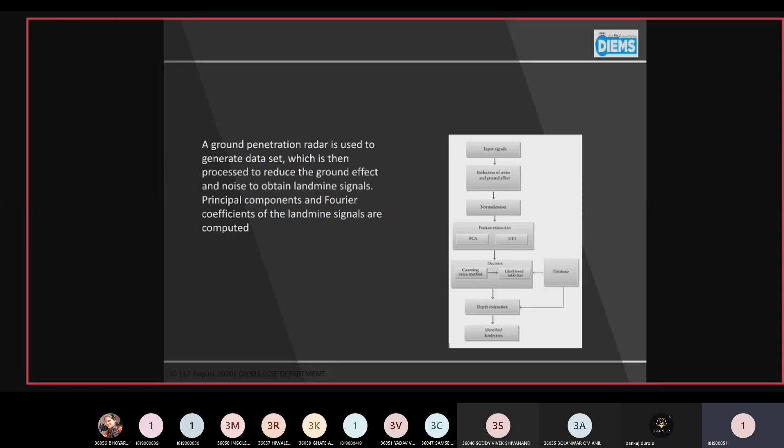The question arises, how does it happen that electromagnetic waves determine whether the landmine is present or not? You can see the diagram here. The ground penetration radar is used to collect data, which is input to the system, which is then processed to reduce the ground effect and noise and to obtain landmine signals. Principle components and Fourier coefficients of the landmine signals are computed.